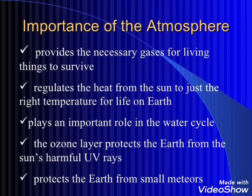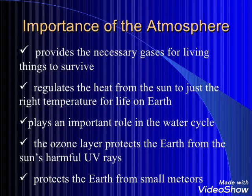The ozone layer protects the earth from the sun's harmful UV rays — ultraviolet rays. The ozone layer is present in the upper atmosphere, in the layer we call the stratosphere, where it absorbs the harmful ultraviolet rays.